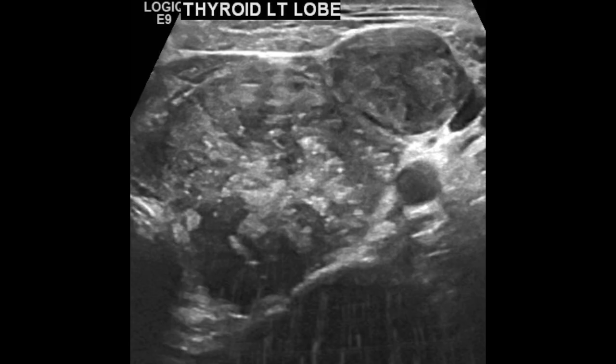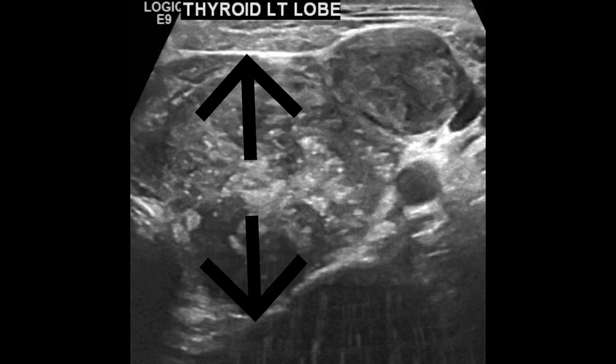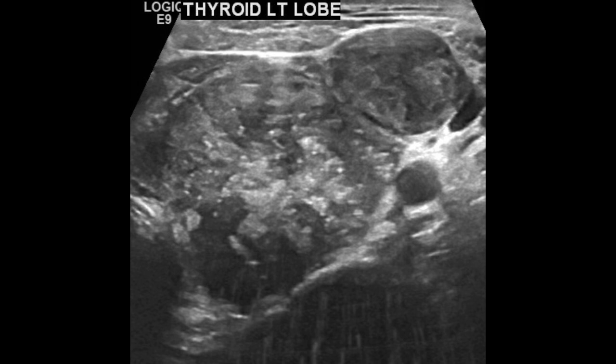Always keep in mind that when a nodule is taller than wider, it means it may invade the surrounding structures. In this case, there is tumor thrombus within the left internal jugular vein.